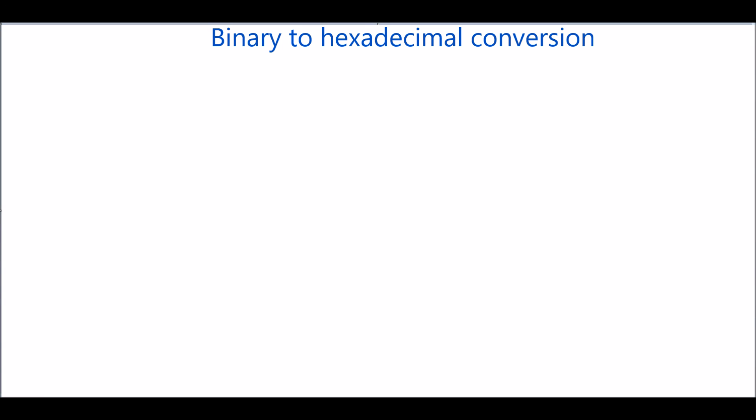In this tutorial I will show you how to convert a binary number into its equivalent hexadecimal number. The numbers 0 to 9 and A to F are used to represent the hexadecimal number system, so the base is 16. The binary number system uses the numbers 0 and 1, so the base of binary is 2. Since 16 equals 2 to the power of 4, with 4 bits we can represent hexadecimal numbers from 0 to 9 and A to F.